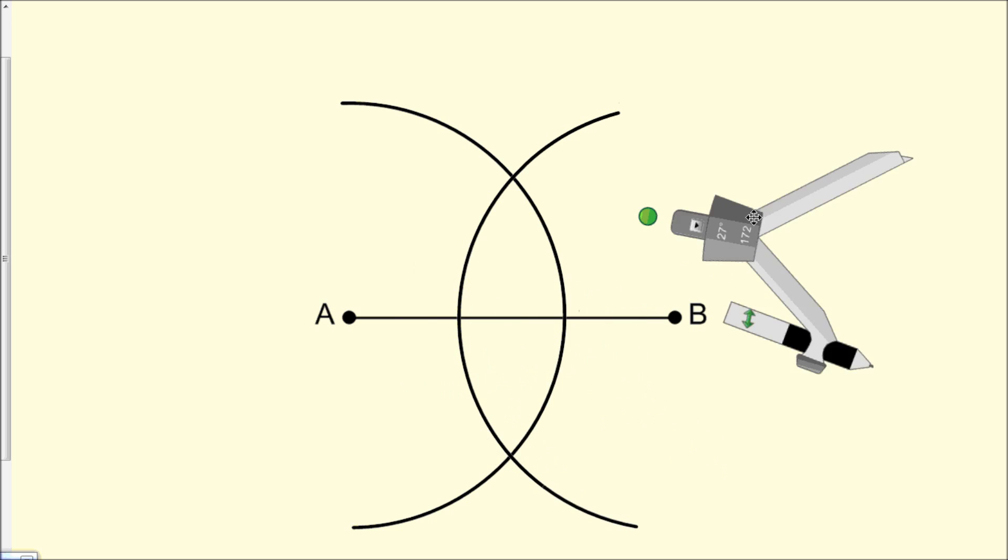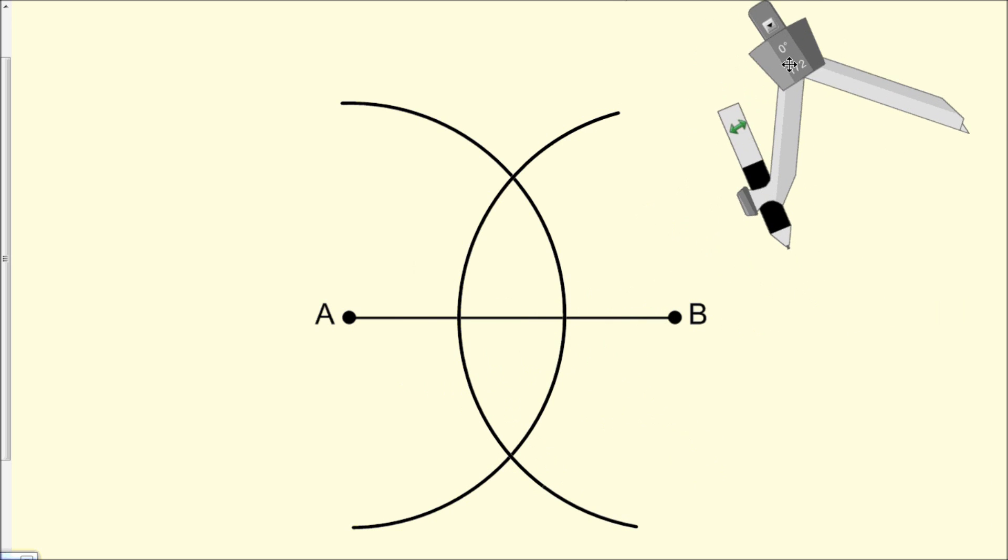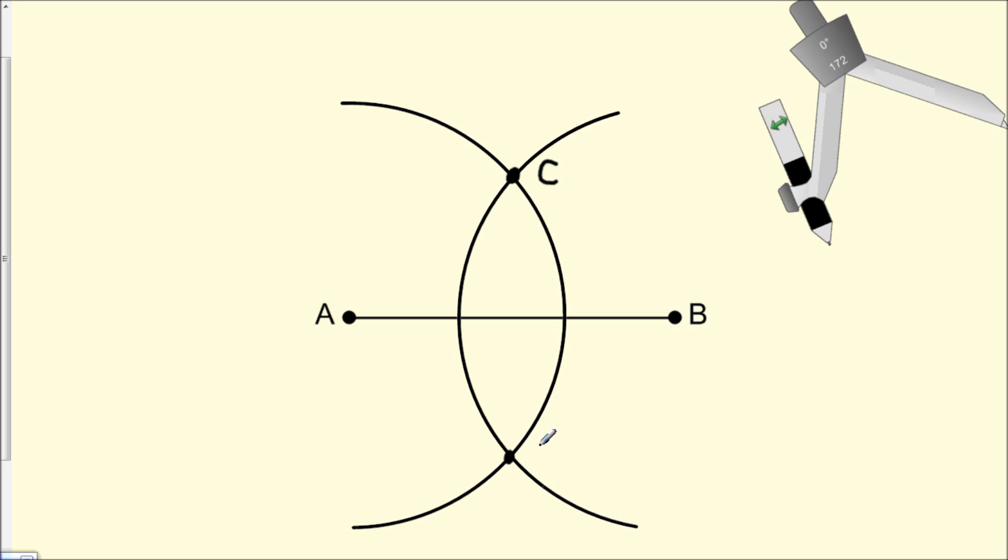We note here that these two arcs intersected in two locations. We're going to label these points of intersection C and D. We'll call the first point C and the second point of intersection D.